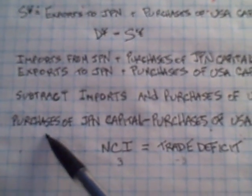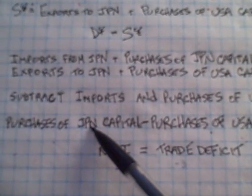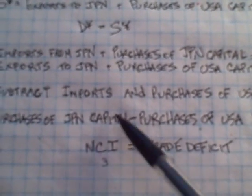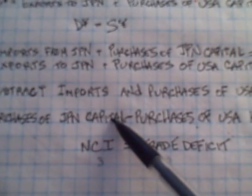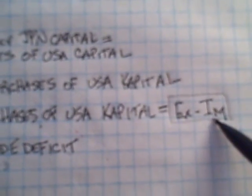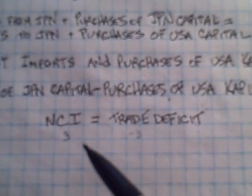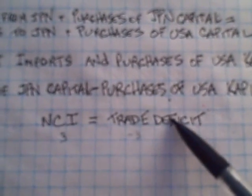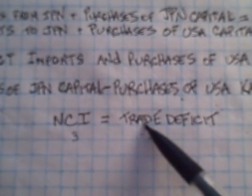And what I'm left with is the purchase of Japanese capital minus the purchase of USA capital on this side, or the two capitals on both sides, and I'm left with exports minus imports on this side. If you look at that equation, then exports minus imports would be the trade deficit.